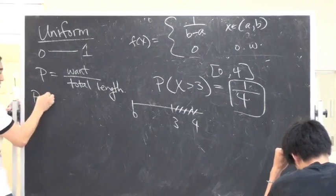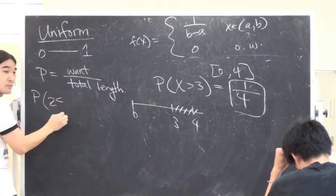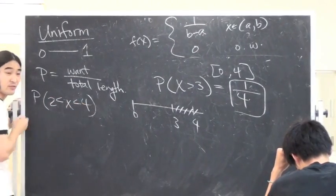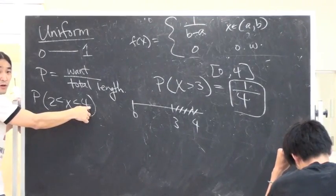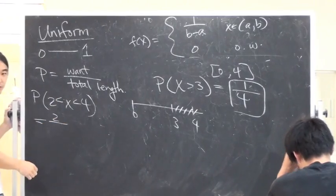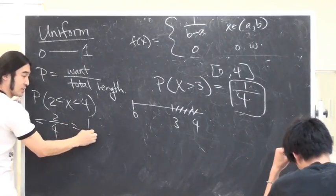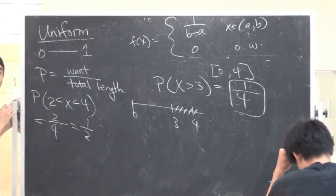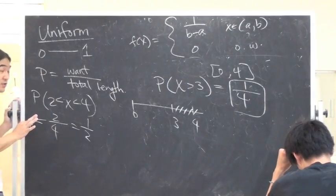Let's try the same thing. What if I made it more complicated? What is the probability you get a number between 2 and 4? 2. What's your total length? 4. So, I guess the probability is 1 half. This is it. This is all of you for uniform.